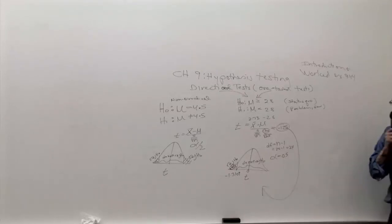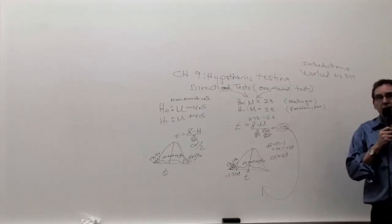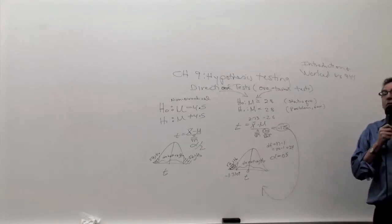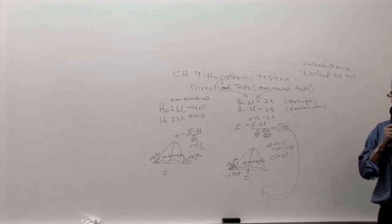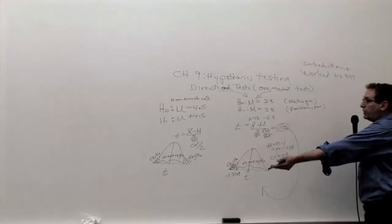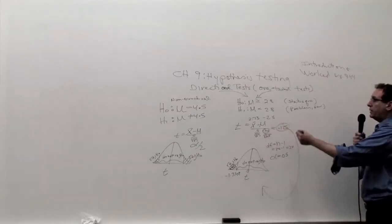Any questions about how to complete step number three and why we don't chop the alpha in half? Step number four is done exactly the same way as step number three, namely you take this number and locate which region. Once you set up step number three, step number four is easy.